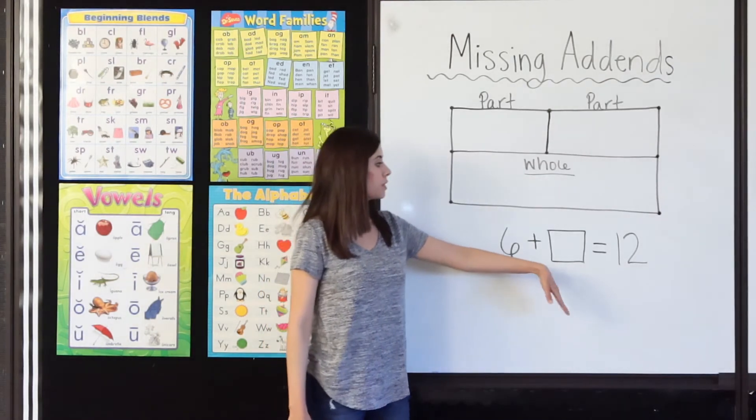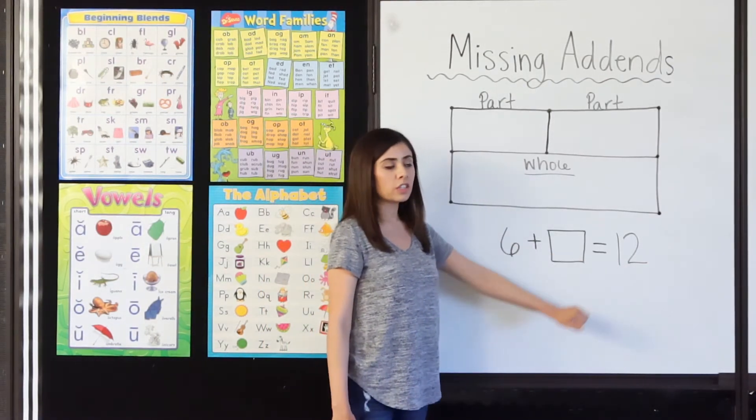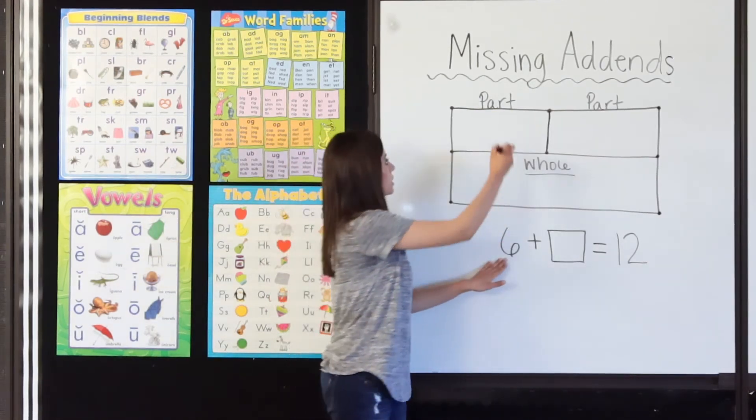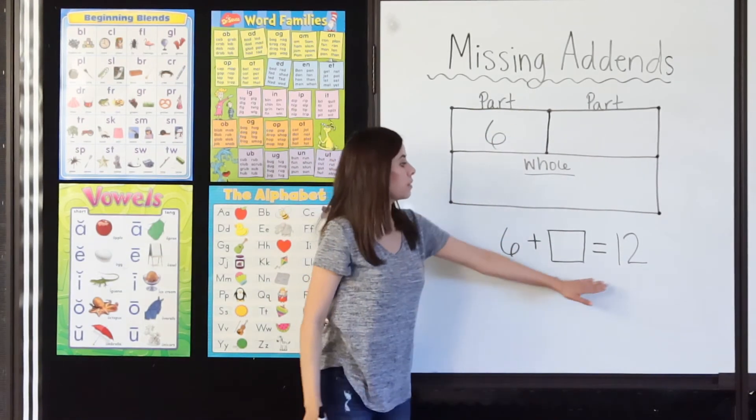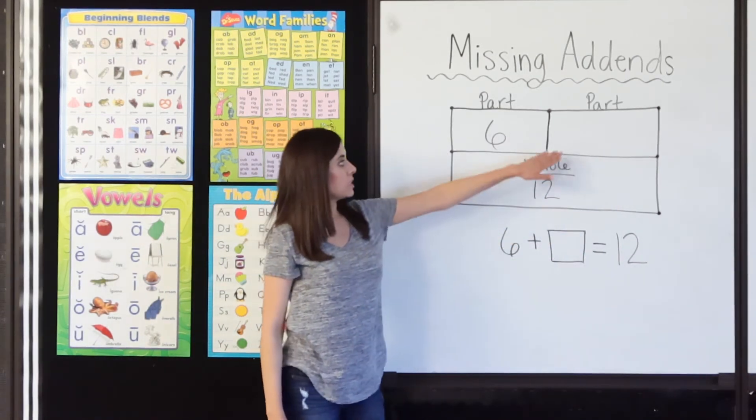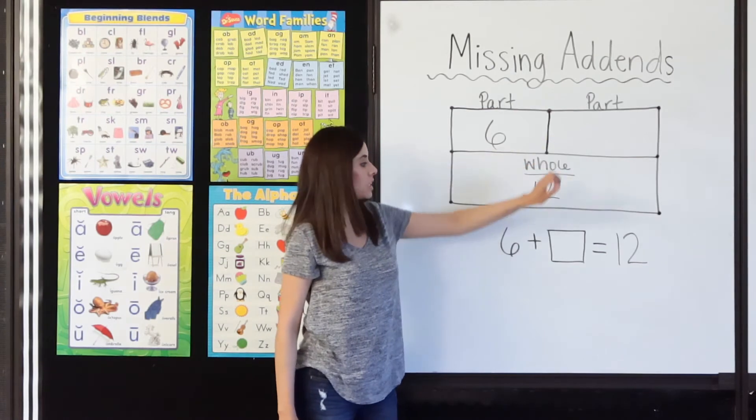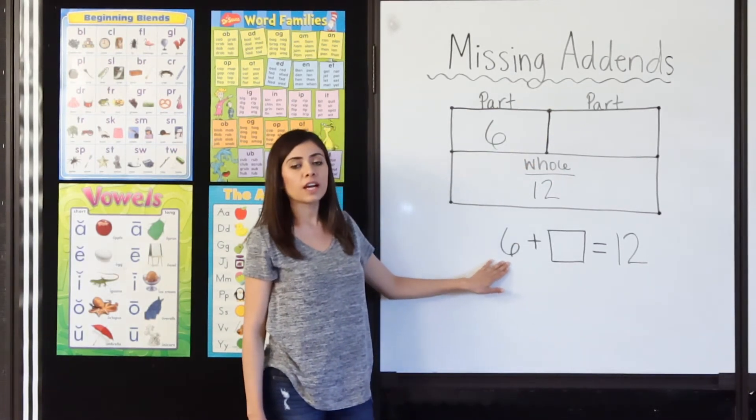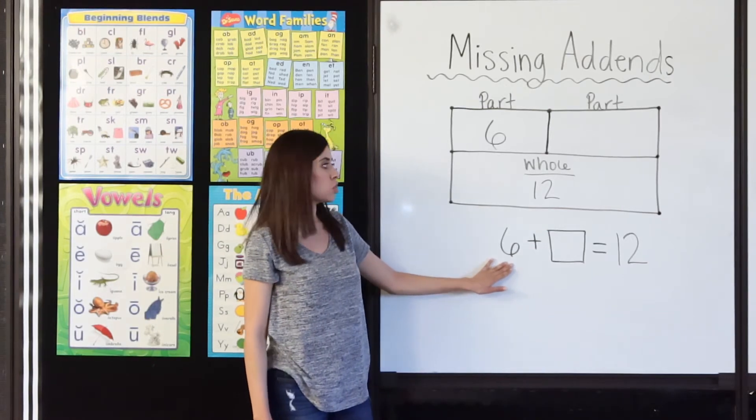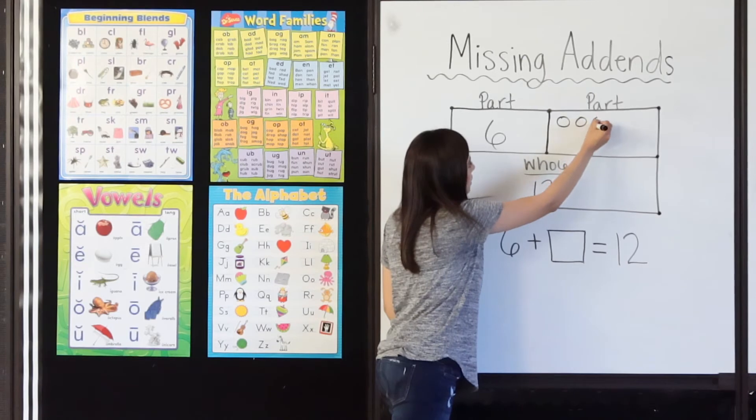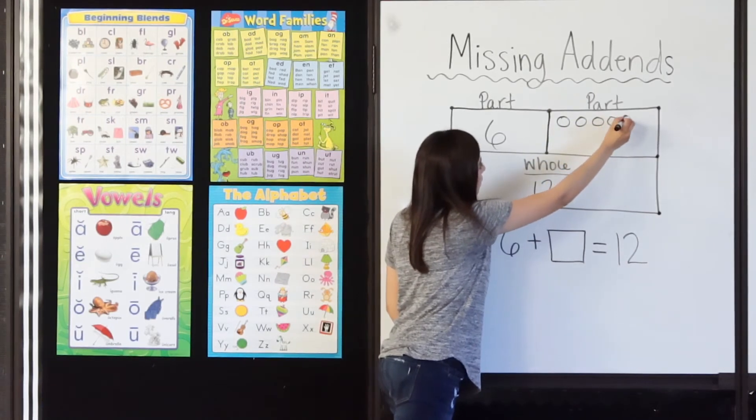6 plus hmm equals 12. So, I will go ahead and fill in my first part, 6, and my whole, 12. Okay, what is my missing addend? Let's go ahead and start at 6 and count up to 12. I will draw circles to help me keep track. 6, 7, 8, 9, 10, 11, 12.